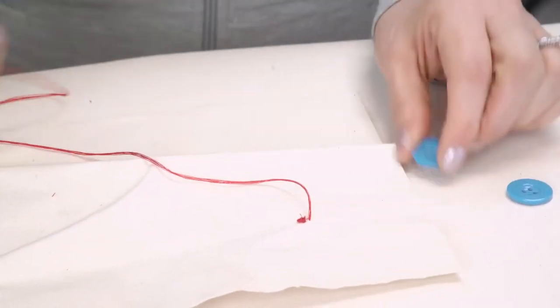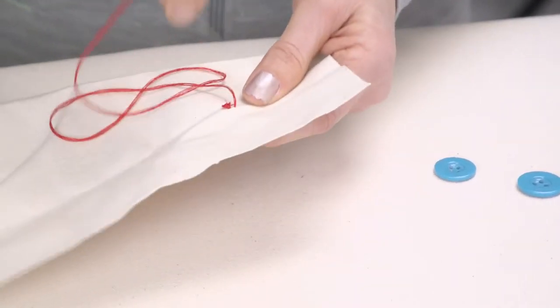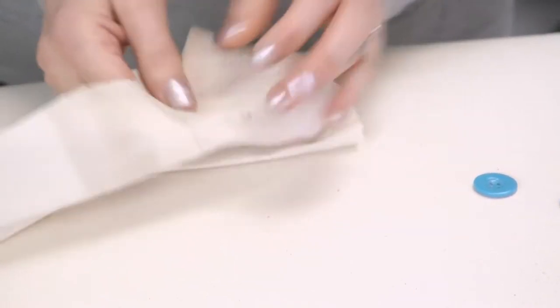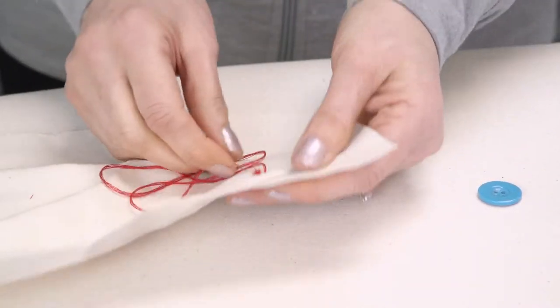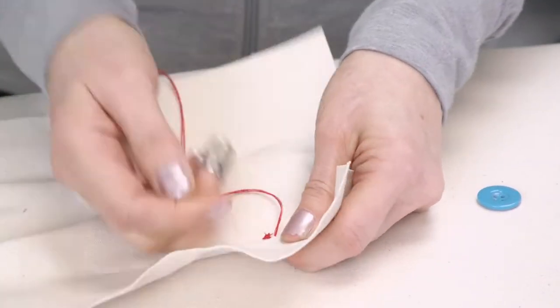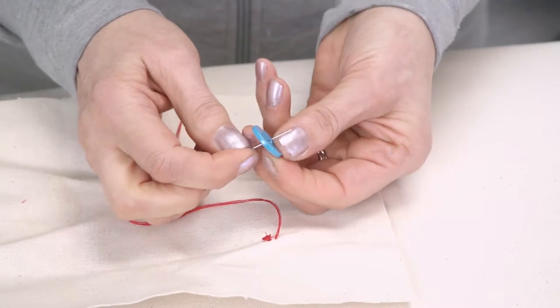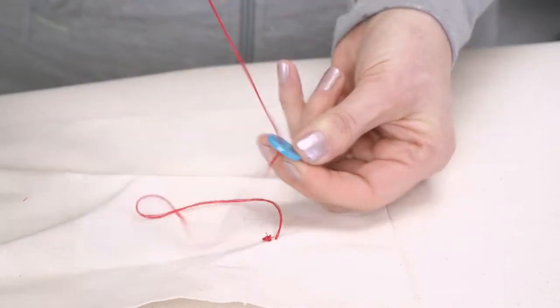When we sew a button on, I've seen people sew buttons on where they put the needle through the material, and then they're pulling it on this side, then they've got to put it back through the material. That's much too time-consuming as well as it's just a lot of guesswork trying to get back up to the other side.